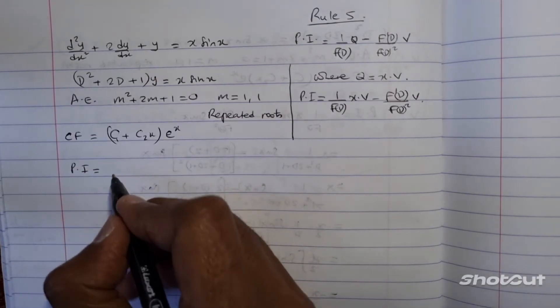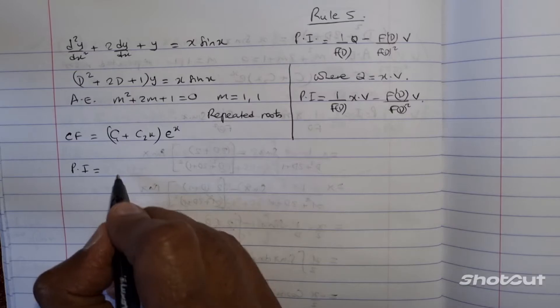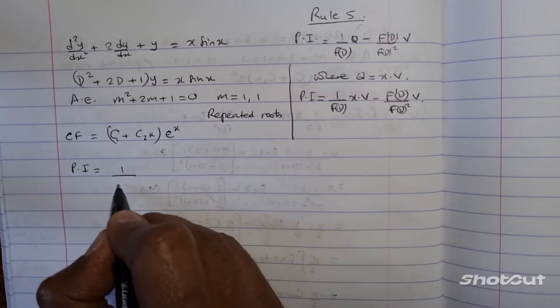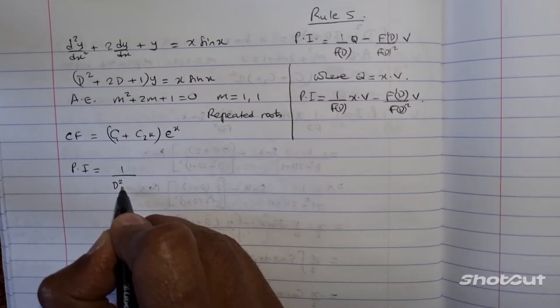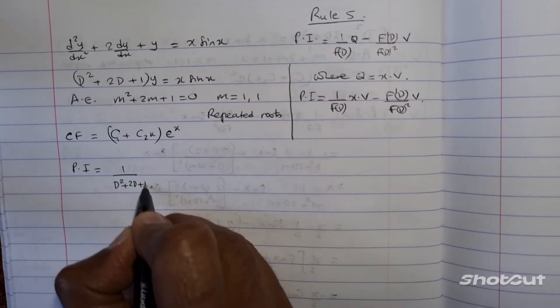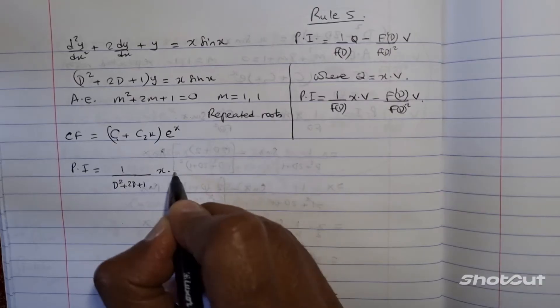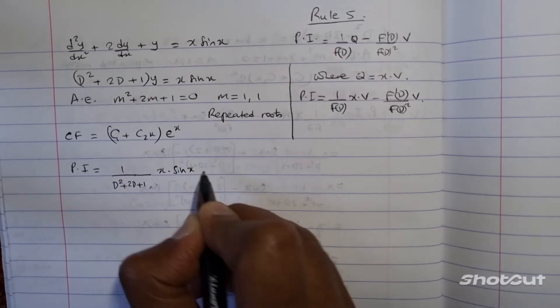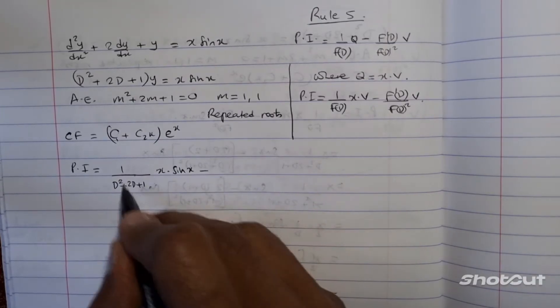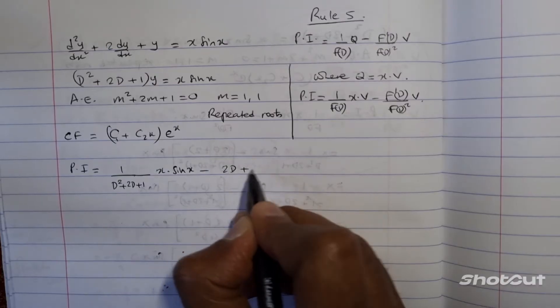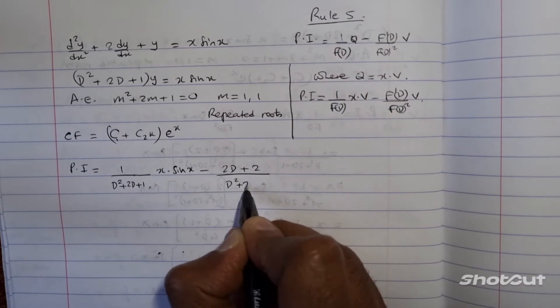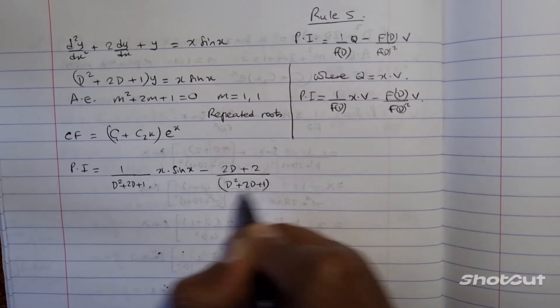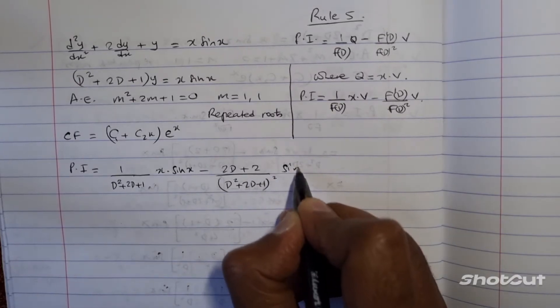we apply rule number five that specifies that should be then 1 over fd. fd here is d squared plus 2d plus 1. So, x into sine x, then minus the derivative of the function, which is then 2d plus 2 divided by the function to the square. fd here, and operating on to sine x.